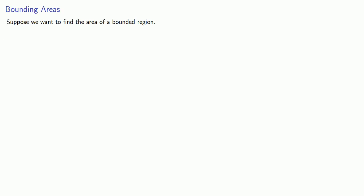So if I want to find the area of a bounded region, one thing we can do is to find bounds for that area. We'll introduce the following terms: u is an upper bound for the area if the area of the region is guaranteed less than or equal to u.